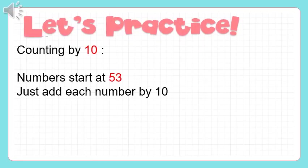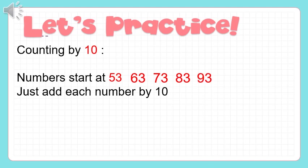Let's practice counting by ten, with numbers starting at fifty-three. Just add each number by ten: fifty-three plus ten is sixty-three, sixty-three plus ten is seventy-three, seventy-three plus ten equals eighty-three, and eighty-three plus ten is ninety-three. So the number pattern from fifty-three counting by tens is: fifty-three, sixty-three, seventy-three, eighty-three, and ninety-three.